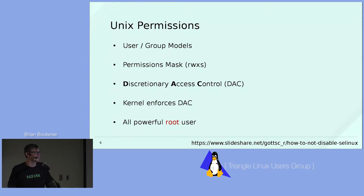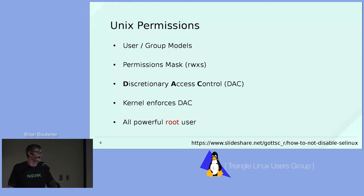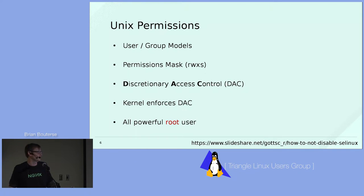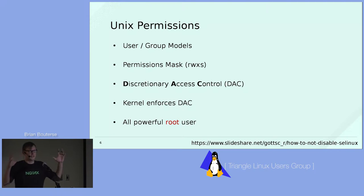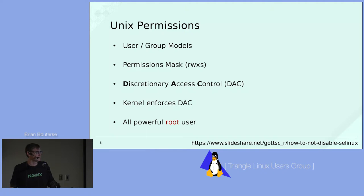A little bit about Unix permissions — this is a Linux meetup so I won't go over these in detail, but we have to ask ourselves why the normal Unix security model isn't enough. It's a user-and-group model with a permission mask covering read, write, execute, and special bits like set-UID. These concepts make up something called Discretionary Access Control, or DAC — part of the kernel that checks user and group membership when accessing files.